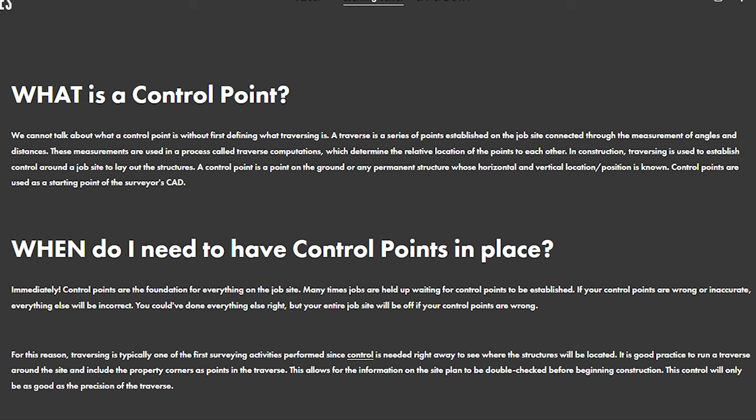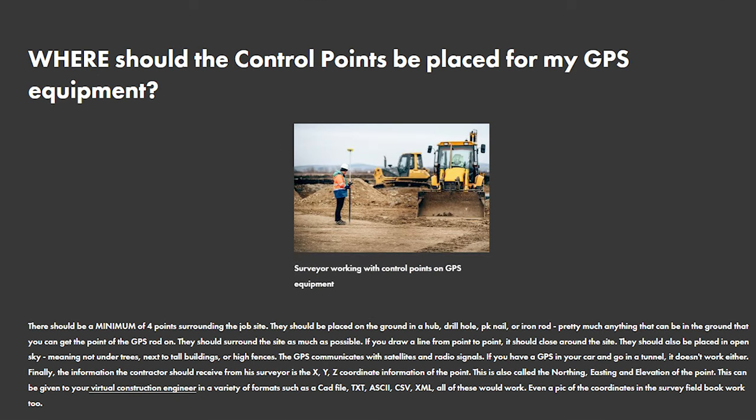So what is a control point? A control point is something like a traverse — a series of points established on the job site connected through the measurement of angles and distances. These measurements are used in a process called traverse computations, which determine the relative location of the points to each other. In construction, traversing is used to establish control around a job site to lay out structures. A control point is a point on the ground or any permanent structure whose horizontal and vertical position is known, and control points are used as a starting point of the surveyor's CAD file.